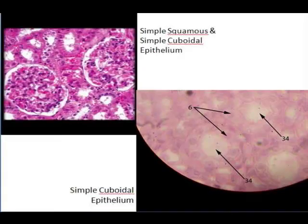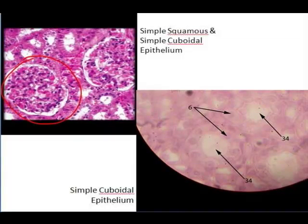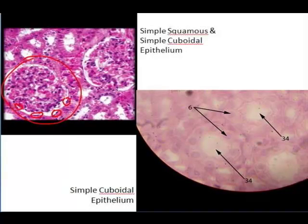Now we're looking at more examples of simple squamous epithelium. Here you have a distinct space lined with flat, tile-shaped cells. This is from a kidney — this is a filtration unit in the kidney. Again, this is epithelium lining a space called a capsule, and these are epithelial cells lining that space. This is also simple squamous epithelium.